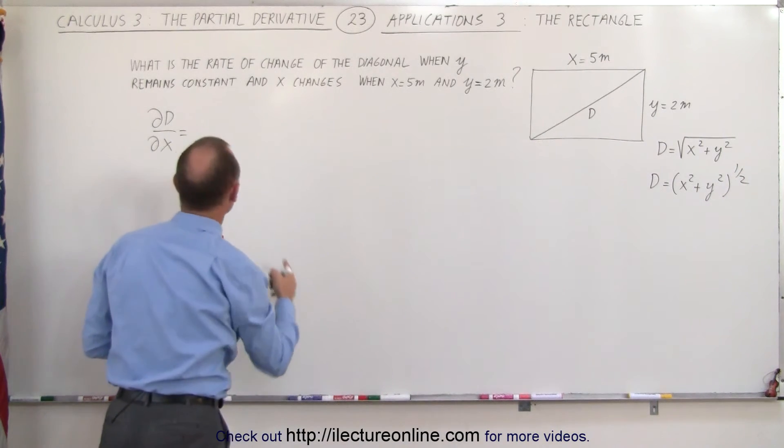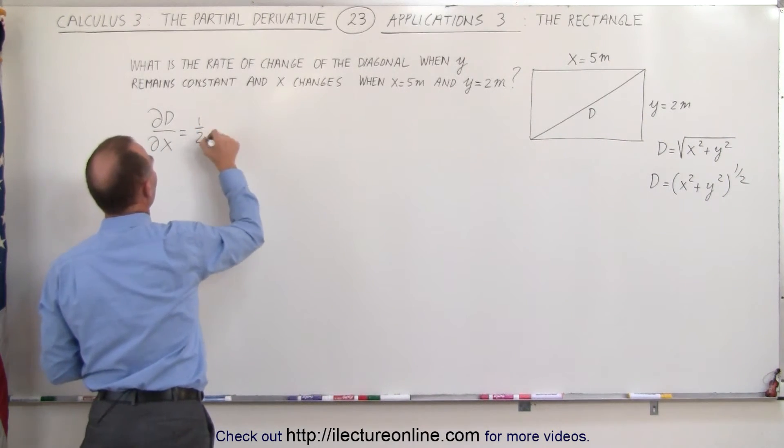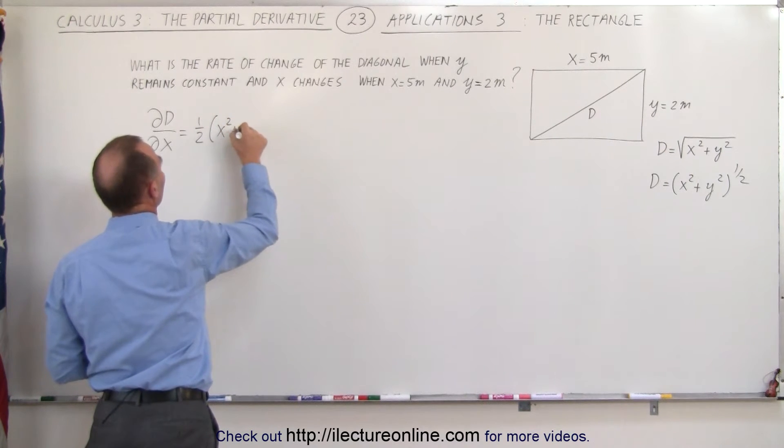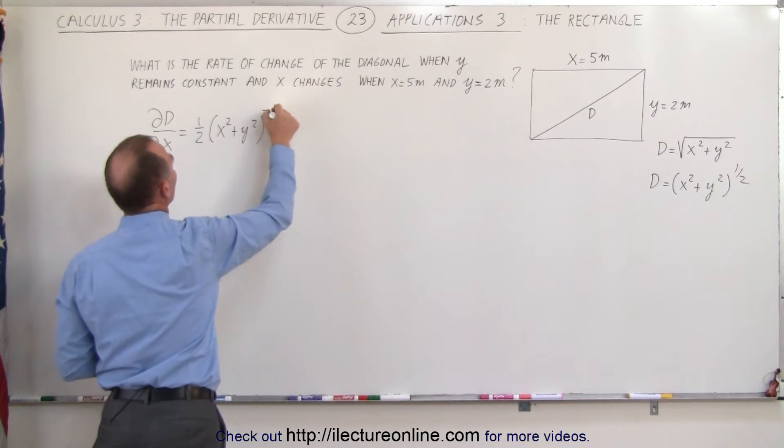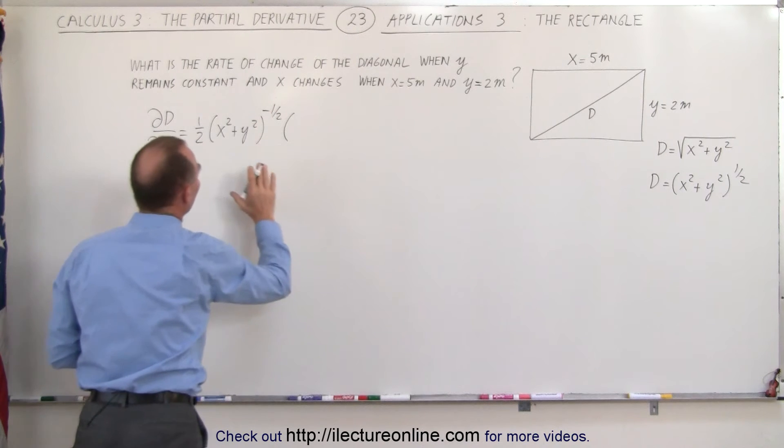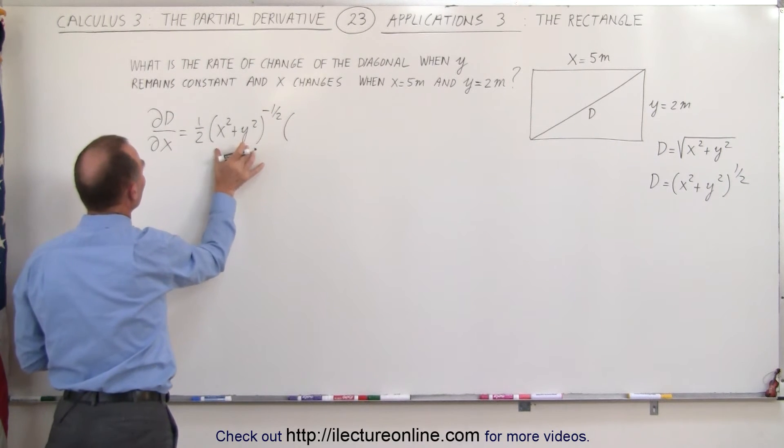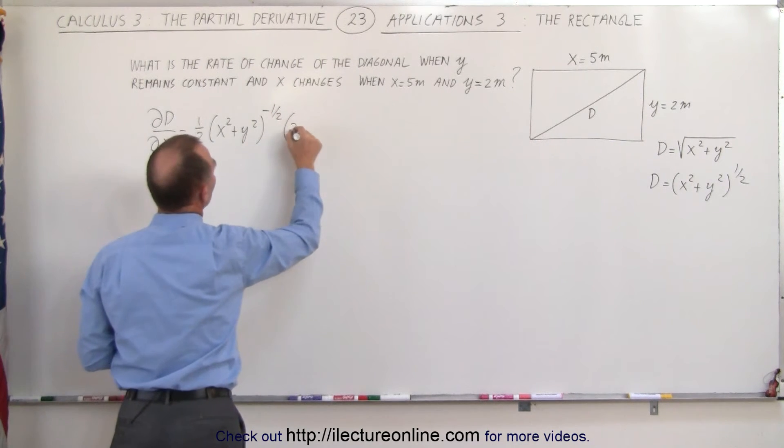So taking the partial derivative with respect to x is equal to one-half times x squared plus y squared to the negative one-half power times the partial derivative of the inside with respect to x which is going to be 2x.